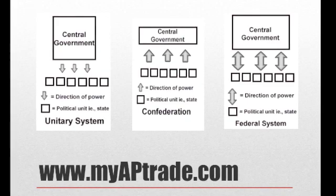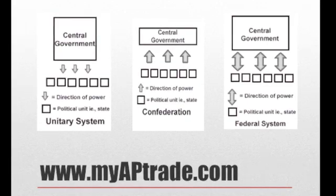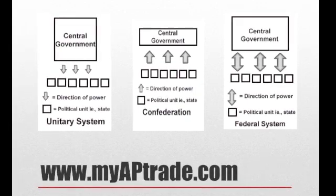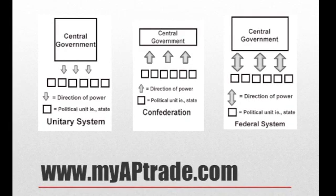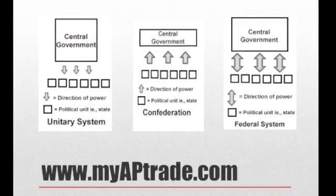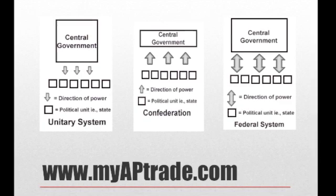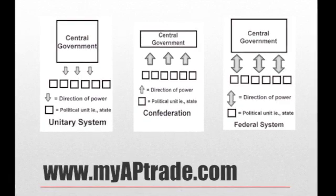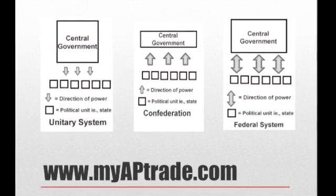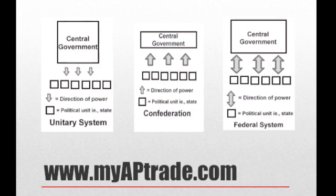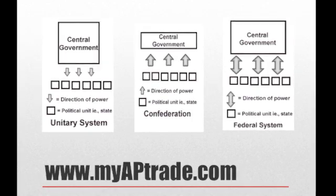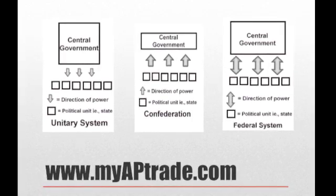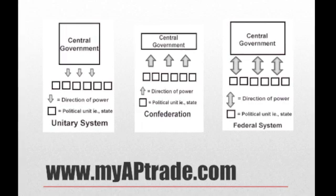A unitary system, like in China, Britain, and France, concentrates all policymaking powers in a centralized government. A confederal system, like the US under the Articles of Confederation and during the Civil War, spreads the power among many subunits and has a weak central government. A federal system, like the United States has today, divides the power between the central and subunit governments.